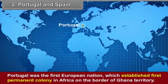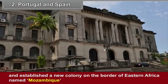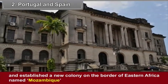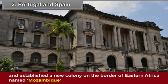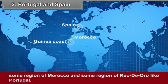Second, Portugal and Spain. Portugal was the first European nation to establish a permanent colony in Africa on the border of Ghana territory. Portugal empowered itself over the region of Angola and established a new colony on the border of Eastern Africa named Mozambique. Spain established power over the islands of the Guinea coast, some region of Morocco, and some region of Rio de Oro, like Portugal.